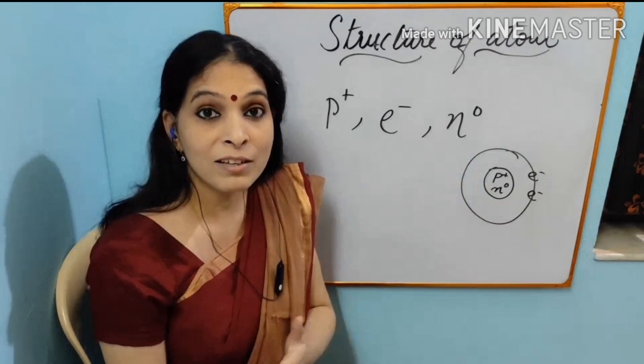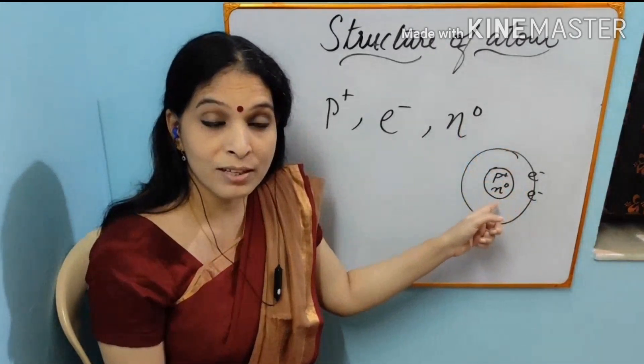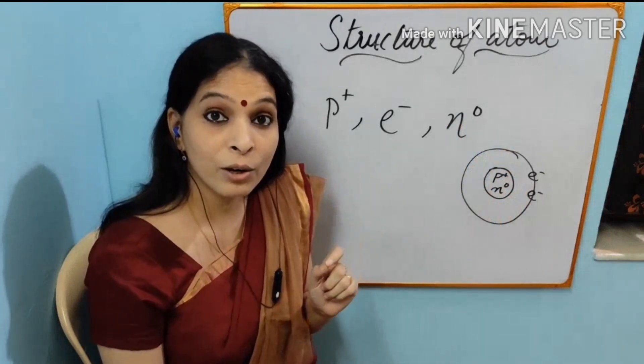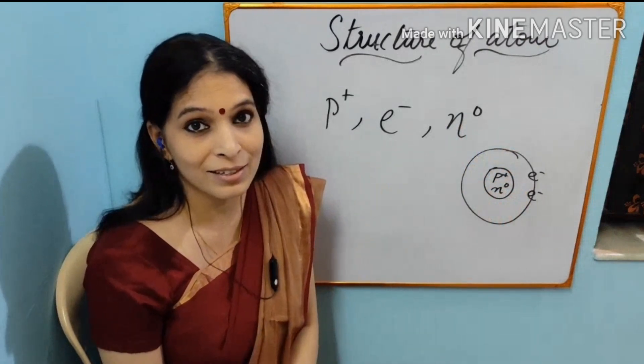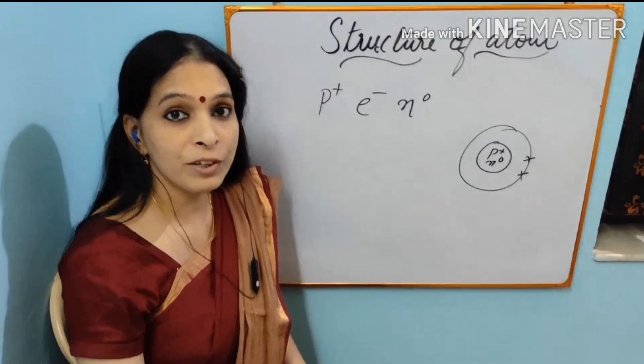And one more amazing fact is that these electrons are revolving around the nucleus at a speed of 2500 km per second. Now let us see atomic number and mass number of an element.